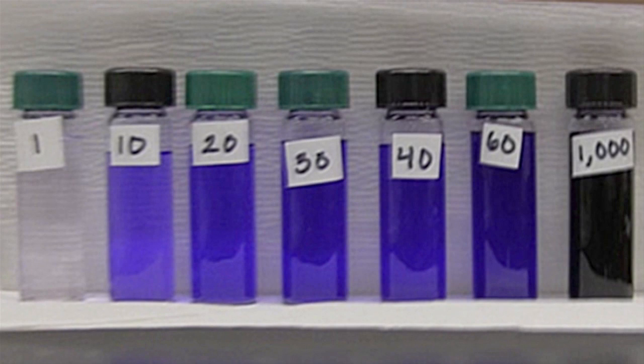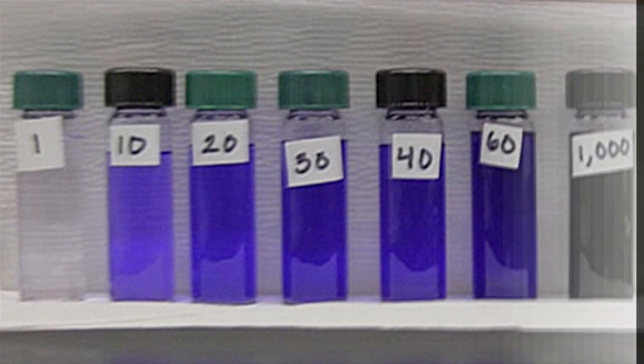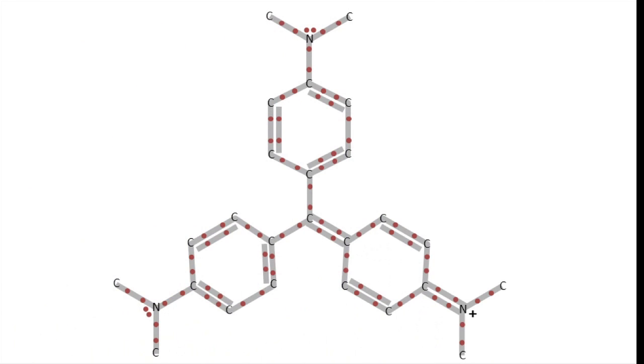And we can see that the more crystal violet powder we add to the water, the darker the solution becomes. So what is it about the crystal violet molecule that makes the solution so very violet? The answer can be found in its structure.